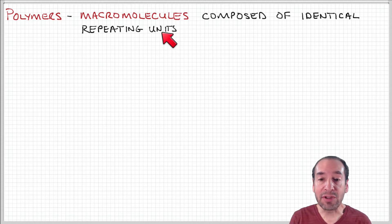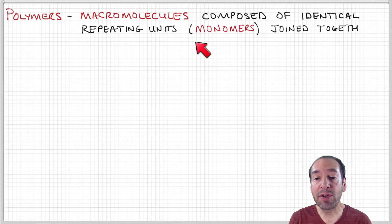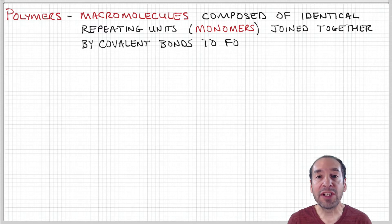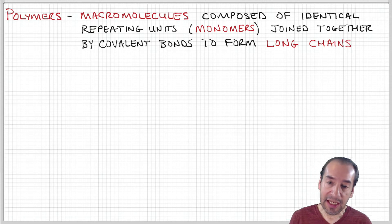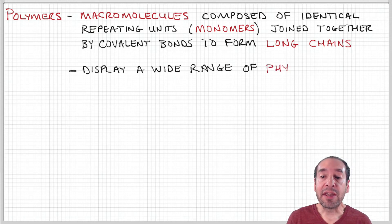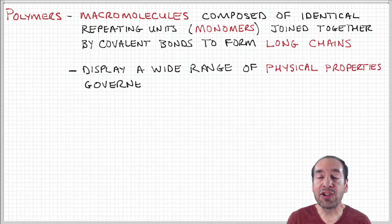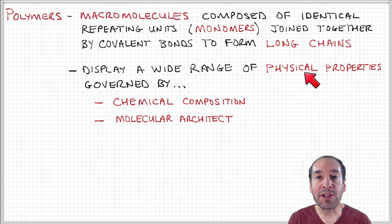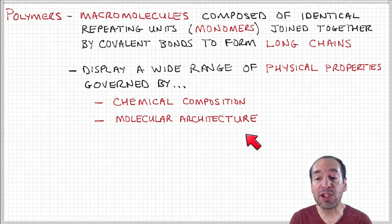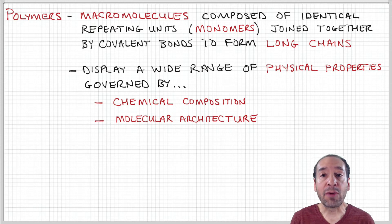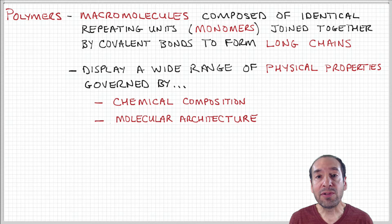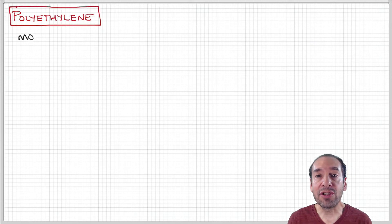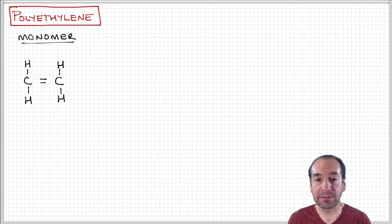Polymers are long chain molecules — macromolecules. These chains are composed of repeated units or monomers that are joined together by covalent bonds to form these long chains. As a result, the nature of the properties of the monomer itself and the nature of how the chain itself is structured both contribute to the physical properties of the resulting material. So both the chemical composition and the molecular architecture of the monomer and the arrangement of the chain are important parameters.